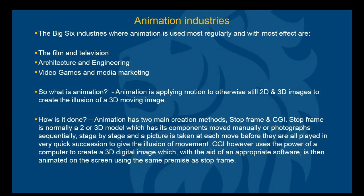The animation industry's big six are: film and television, architecture and engineering (including automotive), video games, and media and marketing. So what is animation in the first place? Animation is applying motion to otherwise still 2D and 3D images. The way that is done to create the illusion of moving images is quite varied — you can do it with simple sheets of paper, where you put them all together and flick through them with an image that changes slightly on each page, and it will look like it is moving.